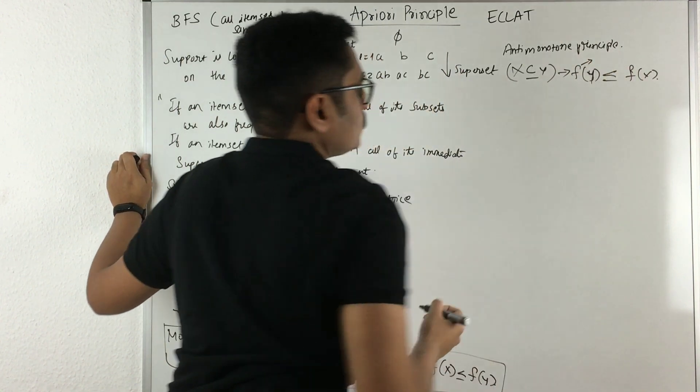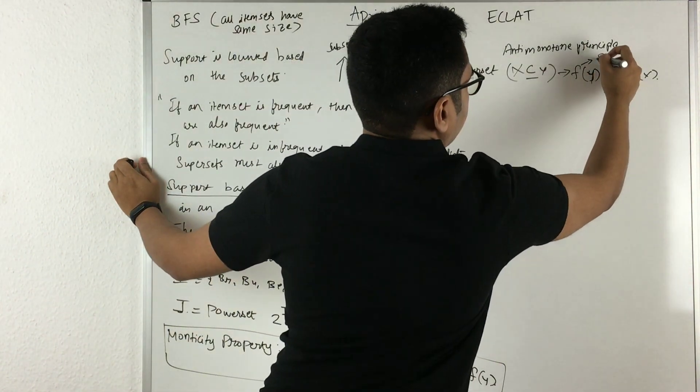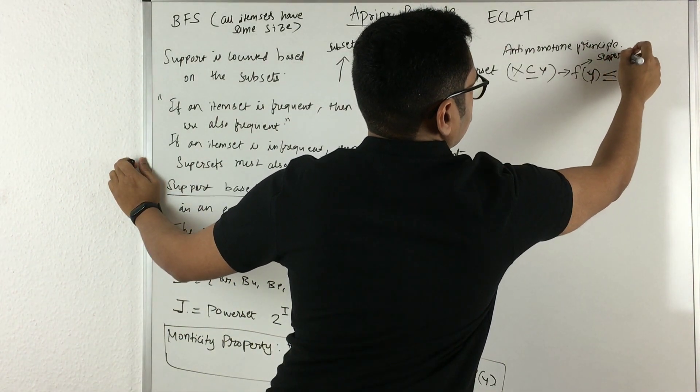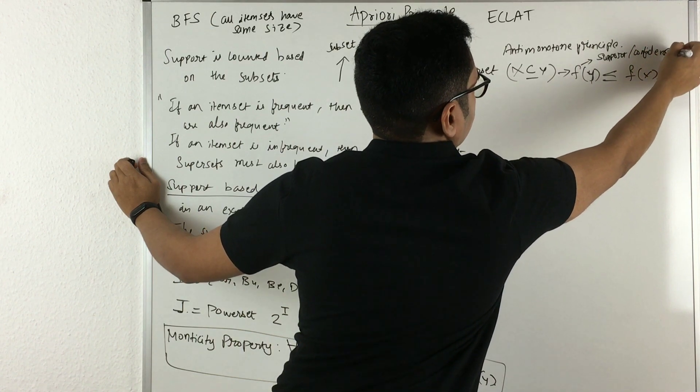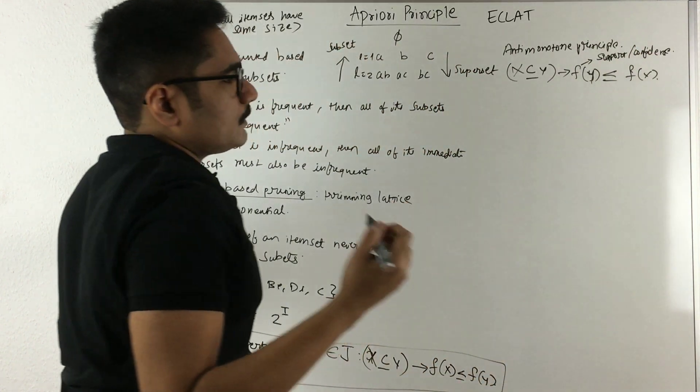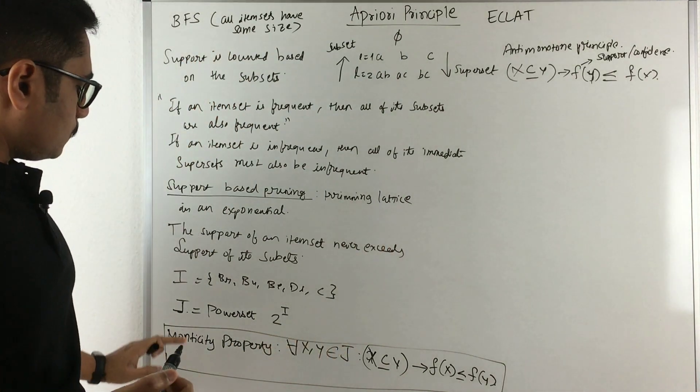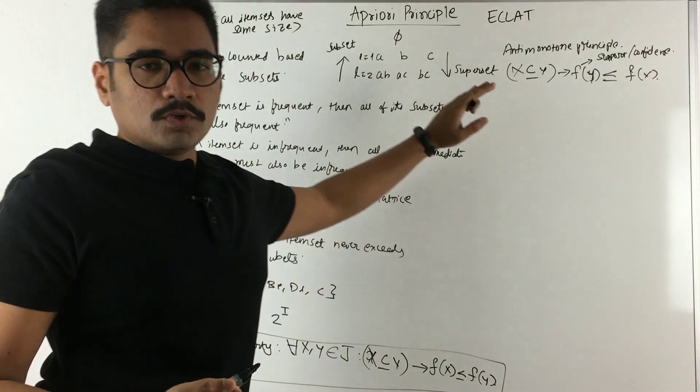What this F is? F is some kind of interestingness measure. It can be either support or confidence. So whenever you do any support-based pruning, you have to follow this monotonic principle or anti-monotone principle.